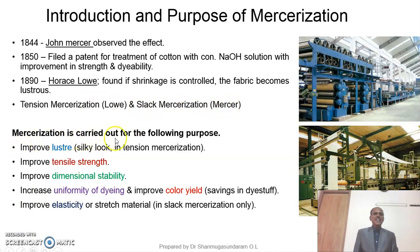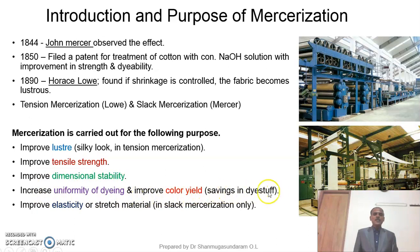Mercerization is carried out for the following purposes: it improves the luster of the material, making it look like silk fabric during tensed mercerization. It improves tensile strength and dimensional stability of cotton fabric, increases uniformity of dyeing and improves color yield, thereby saving dye stuff during the process. It also improves elasticity or stretch of the material during the slack mercerization process.